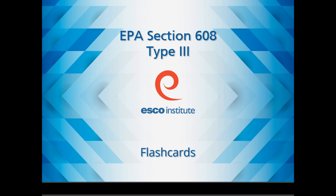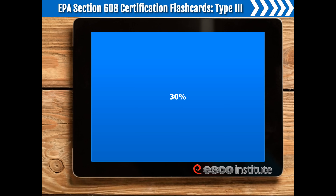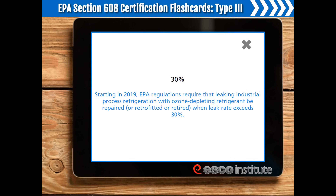Welcome to the ESCO Institute EPA Section 608 Flashcard Program for Type 3 Certification. Please be aware that this is only a sample of the Flashcard Program. The full Flashcard Program is available as part of the ESCO Institute EPA Section 608 Preparatory Course, available at elearning.escogroup.org. 30%. Starting in 2019, EPA regulations require that leaking industrial process refrigeration with ozone-depleting refrigerant be repaired, retrofitted, or retired when the leak rate exceeds 30%.